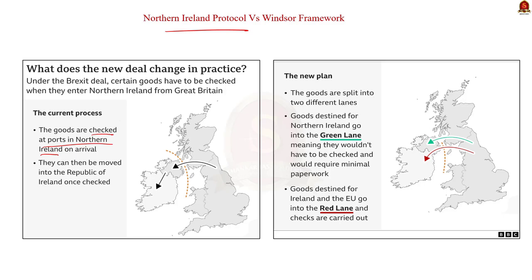The checks applied even if goods would remain in Northern Ireland itself. Unionist parties said these checks created a border between Northern Ireland and the rest of the UK. Businesses also complained about extra cost and delays. This is why the new Windsor Framework was signed — to significantly reduce the number of checks. Two lanes are created for goods arriving in Northern Ireland from Great Britain: a green lane for goods remaining in Northern Ireland (no checks or paperwork) and a red lane for goods that may be sent on to the EU (subjected to checks).